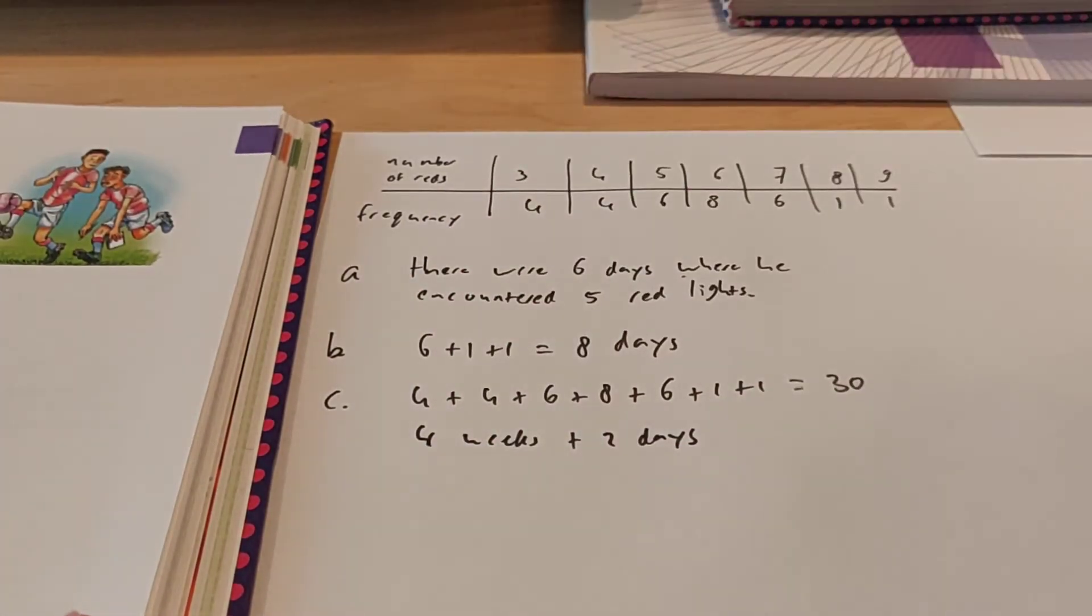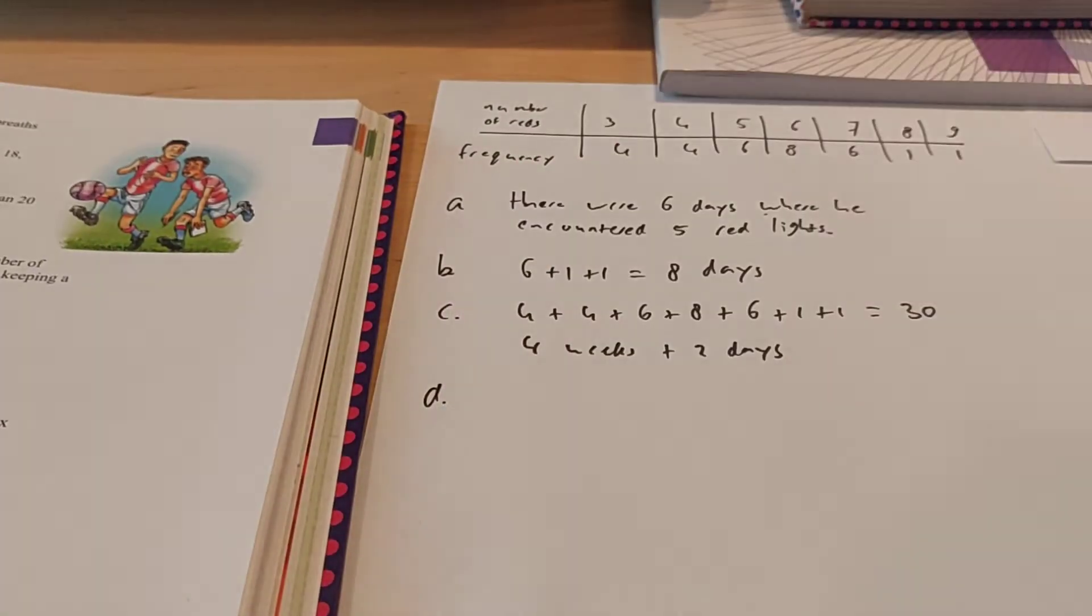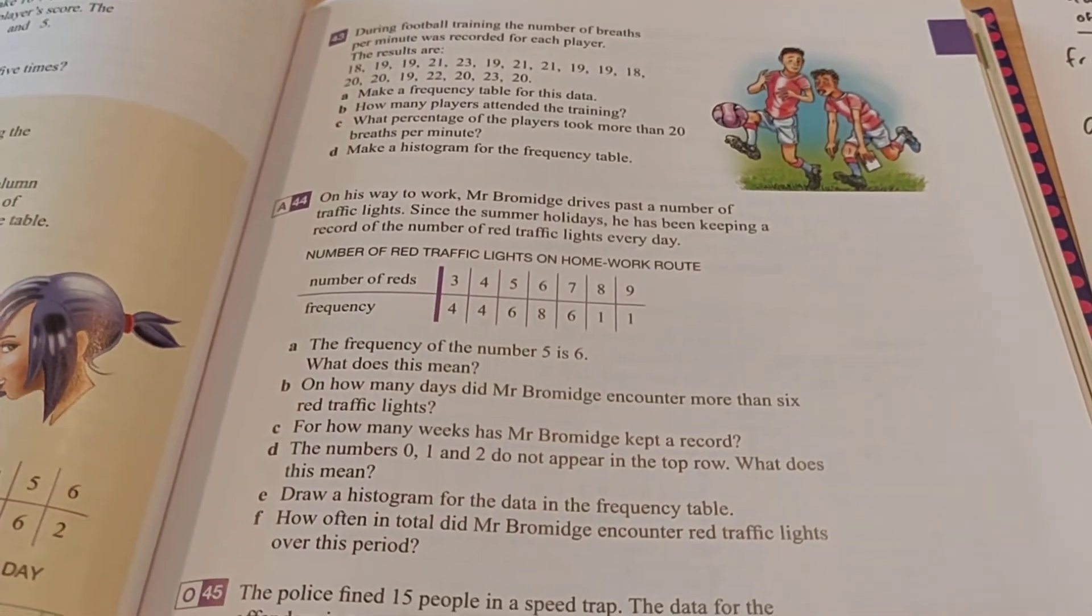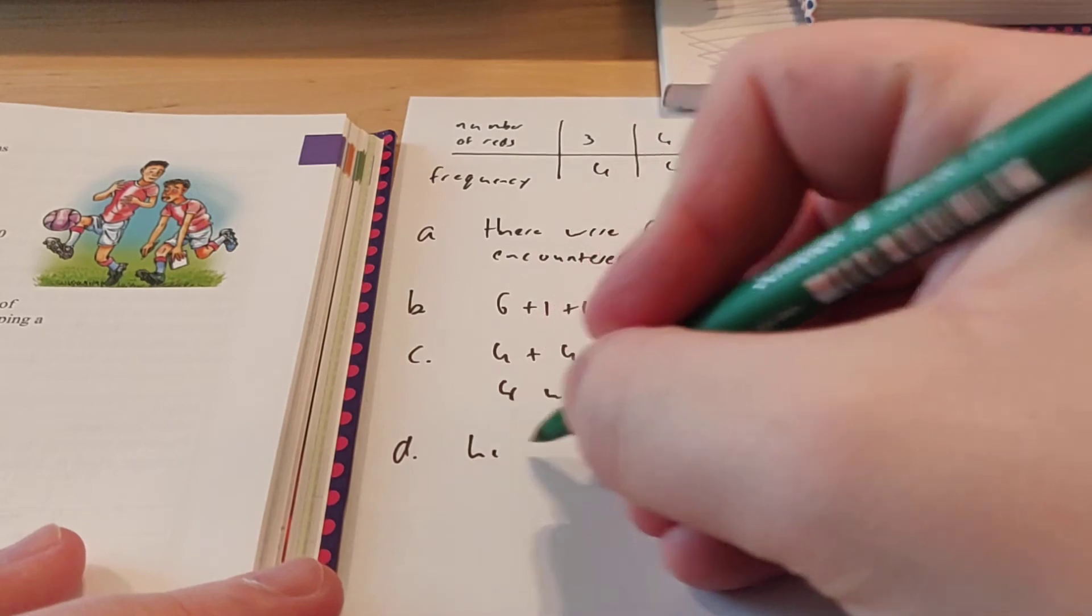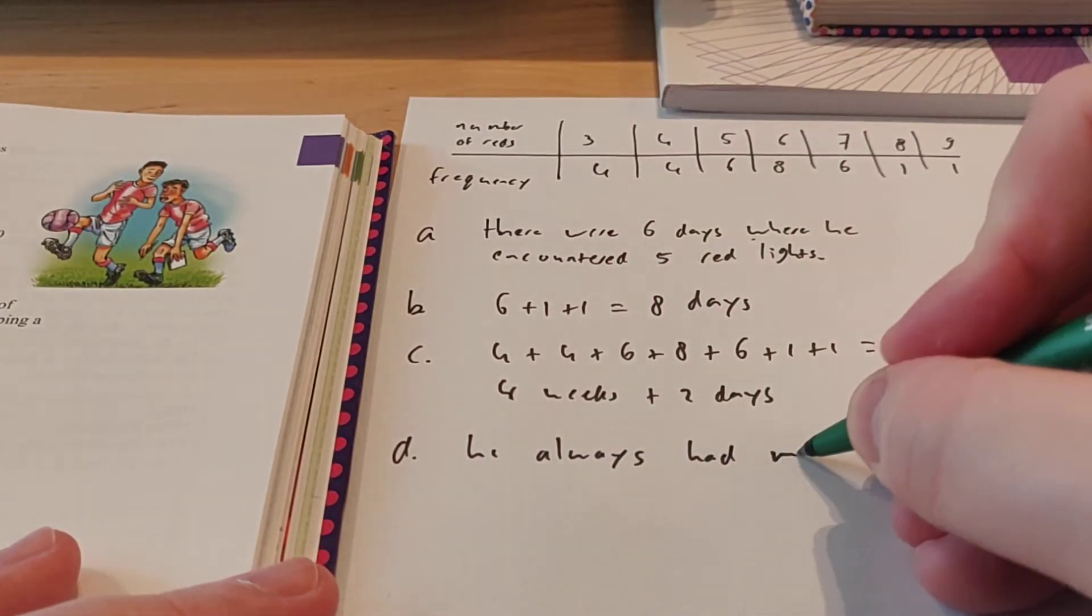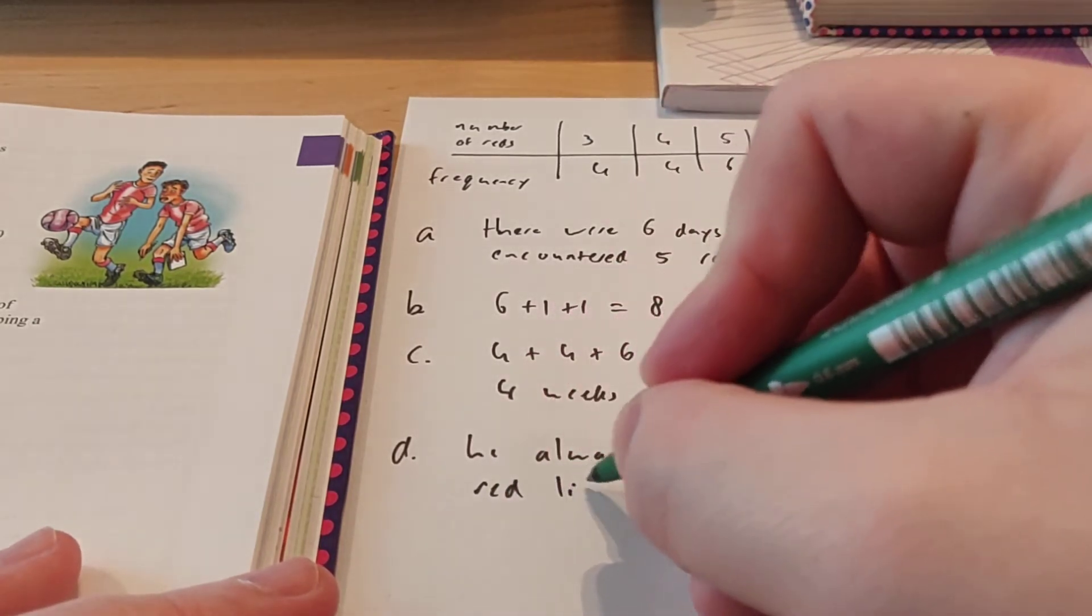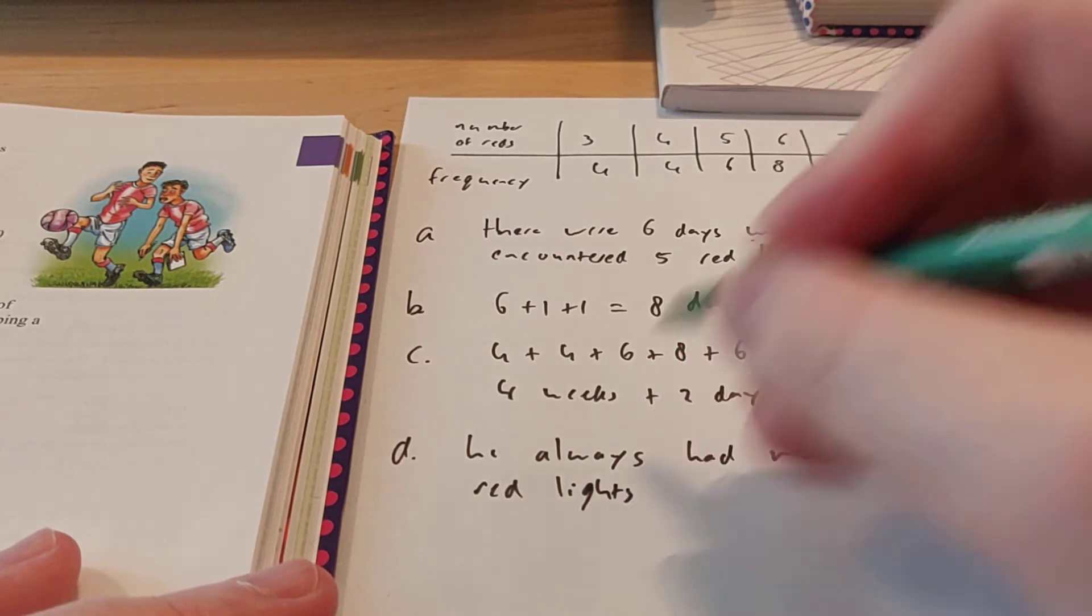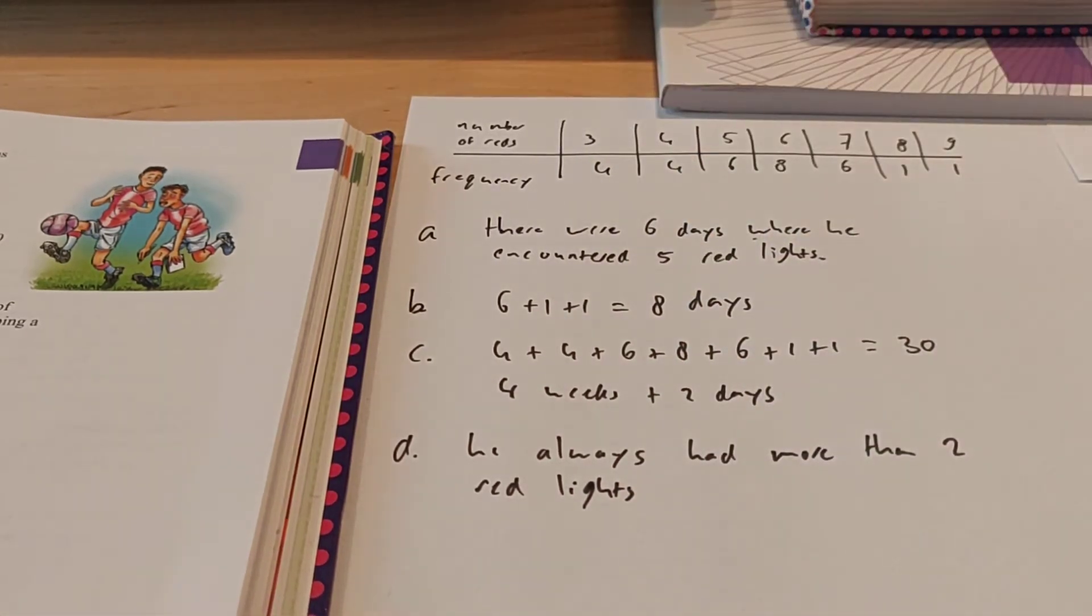It's a bit of a weird question that they ask for how many weeks did he keep a record. But that's 4 weeks, and then he has 2 days left. Then D, it says here, the numbers 0, 1 and 2 do not appear in the top row. What does this mean? Well, it means he always had more than 2 red lights. The number of red lights was at least 3 every time.